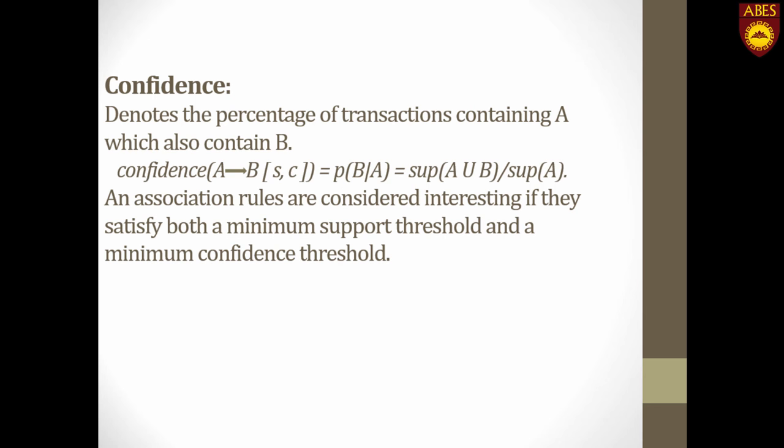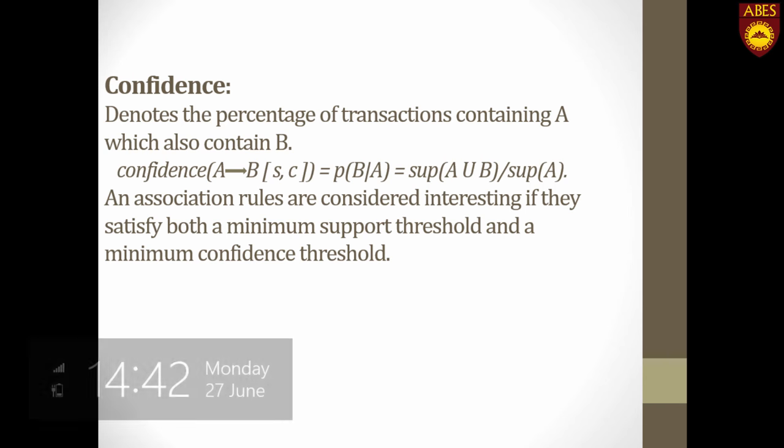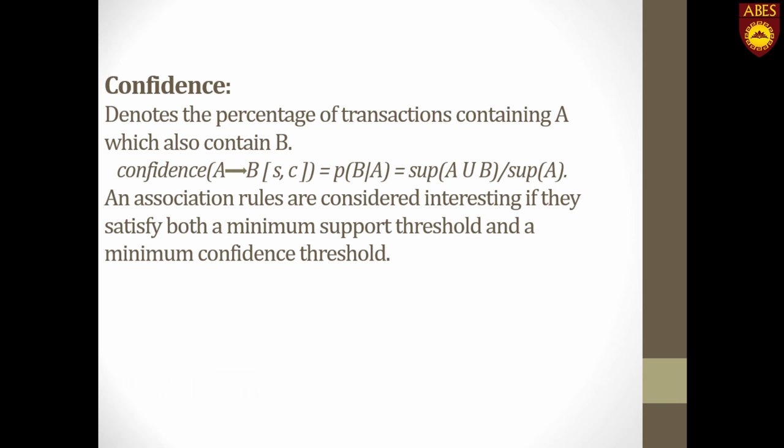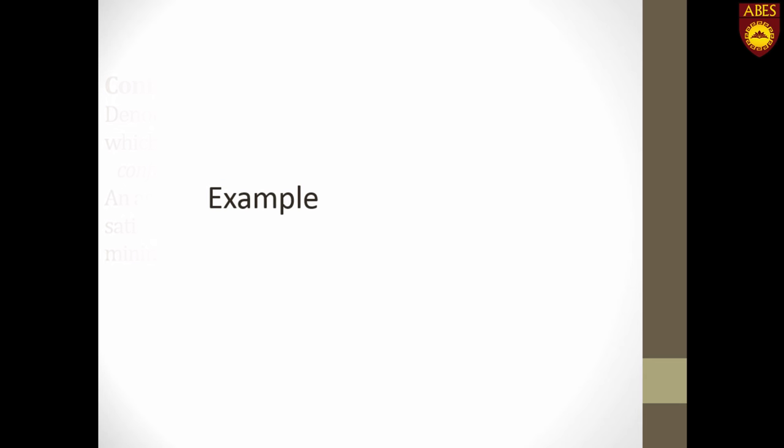An association rule is considered interesting only if it satisfies a certain minimum support threshold and a minimum confidence threshold. We will now discuss an example related to finding out association rules.